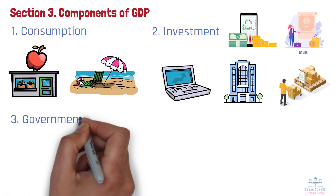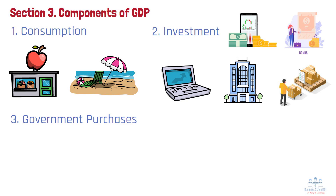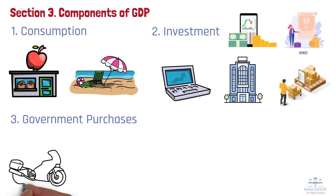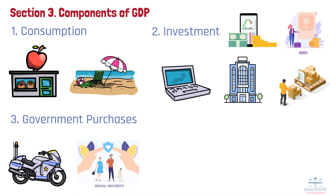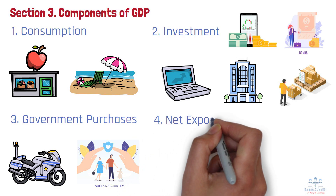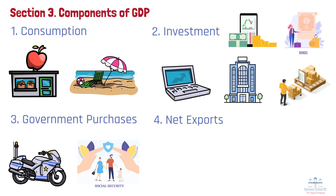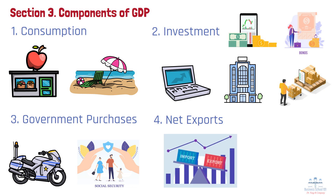Number 3: Government purchases — this is what the government spends on goods and services, such as public safety, defense, and infrastructure. It's important to note that transfer payments like social security are not included here, since they're not payments for goods or services. Number 4: Net exports — this is exports minus imports. It shows the balance between what we sell to other countries and what we buy from them.